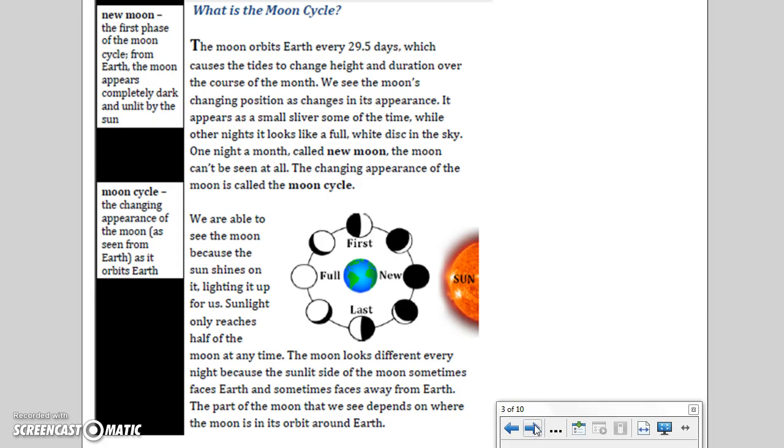What is the moon cycle? The moon orbits Earth every 29.5 days, which causes the tides to change height and duration over the course of the month. We see the moon's changing position as changes in its appearance. It appears as a small sliver some of the time, while other nights it looks like a full white disk in the sky. One night a month, called new moon, the moon can't be seen at all. The changing appearance of the moon is called the moon cycle.